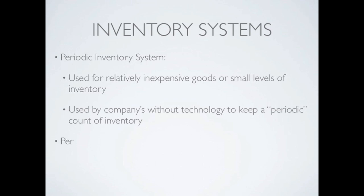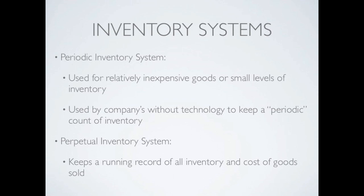The other type of inventory system is called perpetual. This is where we have a running record of all inventory and cost of goods sold. Each time a sale is made, it is taken out of inventory and the cost is recorded. For example, if you've ever been to a large department store like a Target or a Walmart and they slide items across the scanner and it beeps — every time it beeps, it's immediately taken out of inventory and the cost is recorded.